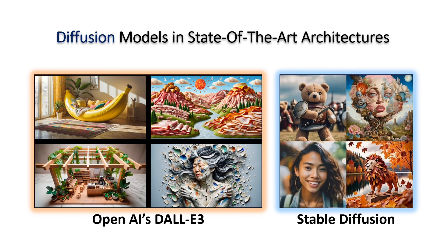Stable Diffusion and OpenAI's DALL-E 3 are two of the best AI image generation models available right now, and they are using diffusion models as their core technology. This suggests that diffusion models are the lead technology in image or video generation right now.